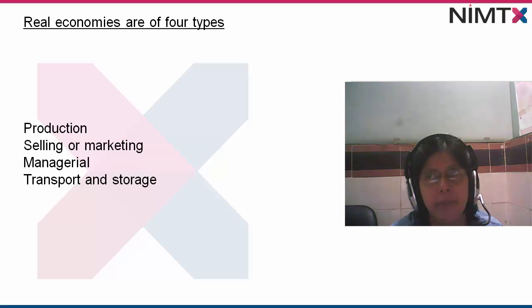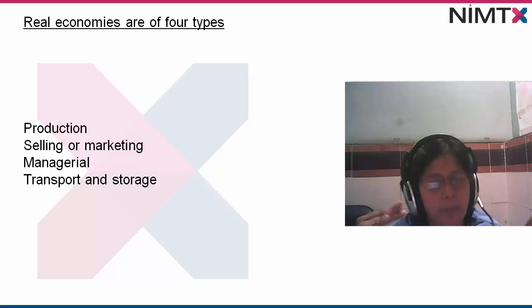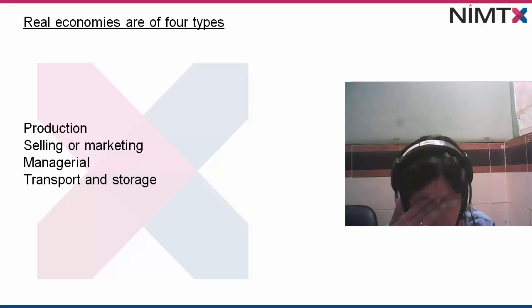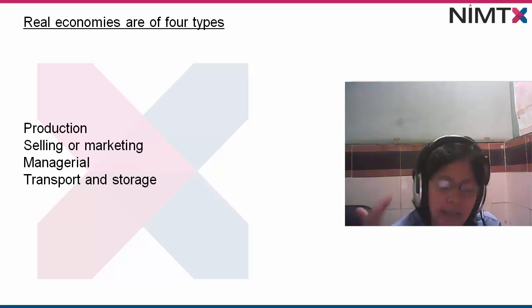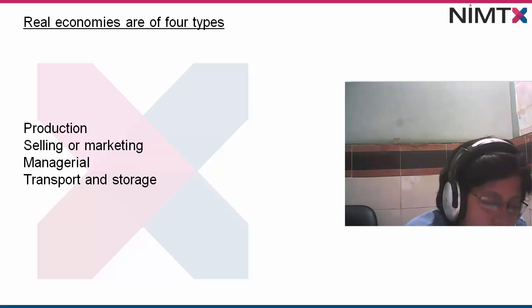Next are storage and transport economics. Both are associated with production cost as well as selling cost. In production, transportation of raw materials from one place to another is considered, and in selling cost, the product is transported to be sold. The construction of a warehouse follows geometrical relationship rules between surface area, capacity, volume, and input. These are the four areas of real economics.